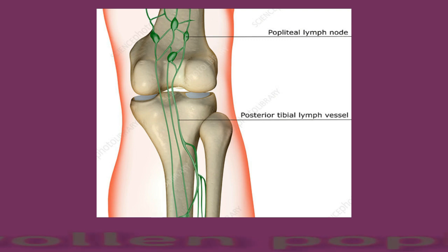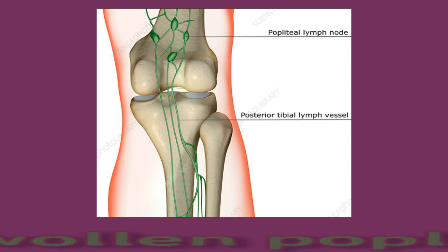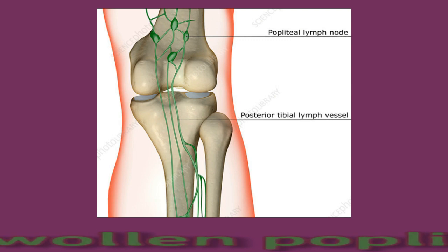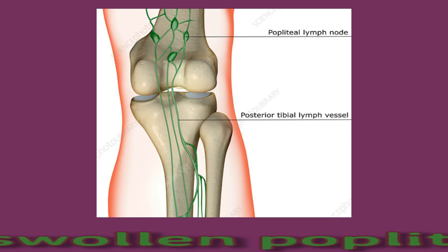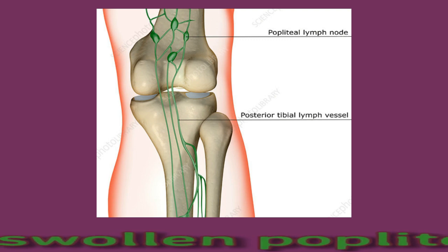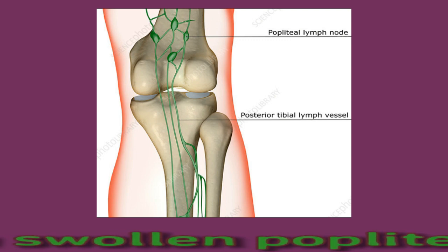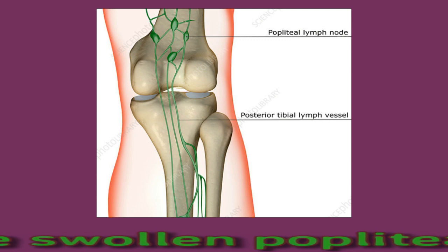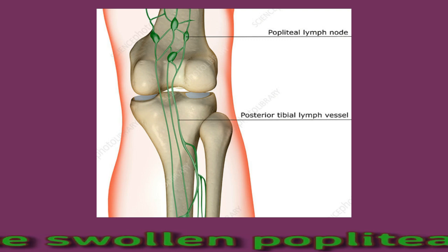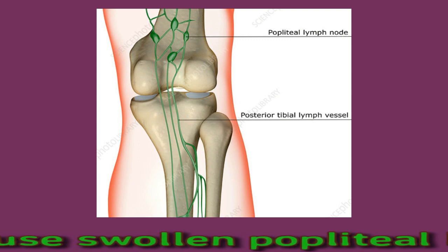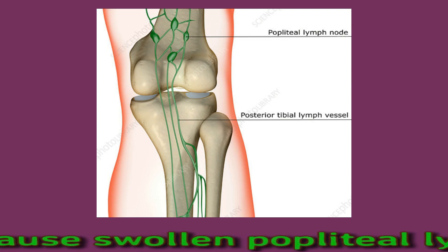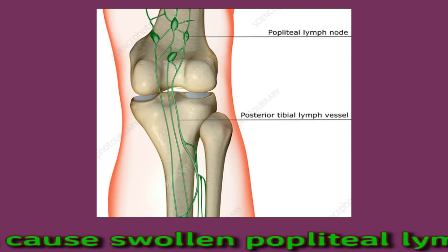What can cause swollen popliteal lymph nodes? Lymphadenopathy is swelling of the lymph nodes. It arises when too many lymphocytes accumulate within the lymph nodes. Lymphocytes are special types of white blood cells — a kind of immune system cell. According to a 2022 review, many health conditions can cause lymphocytes to accumulate. Some possible causes of swollen popliteal lymph nodes include infections.